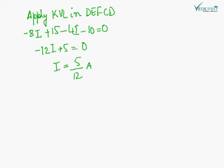Now apply KVL in DEFCD loop and the equation is coming out to be this. I we will get is 5 upon 12A.